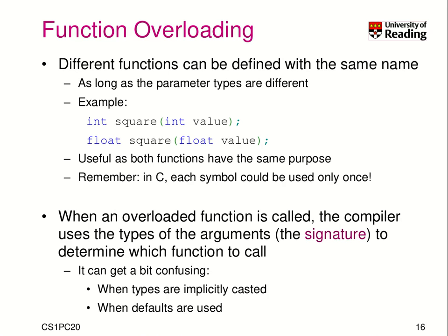A very useful feature is function overloading. Before, when we had two functions like a function 'square', we could not reuse an identifier with the same name unless the signature was different. It might be useful to write a square function for different data types — you may want to square an integer or a floating point value. In C, we would have said square_int or square_float. In C++, that's not needed anymore. You can have two functions that have different arguments, and if the parameters differ, it will work.